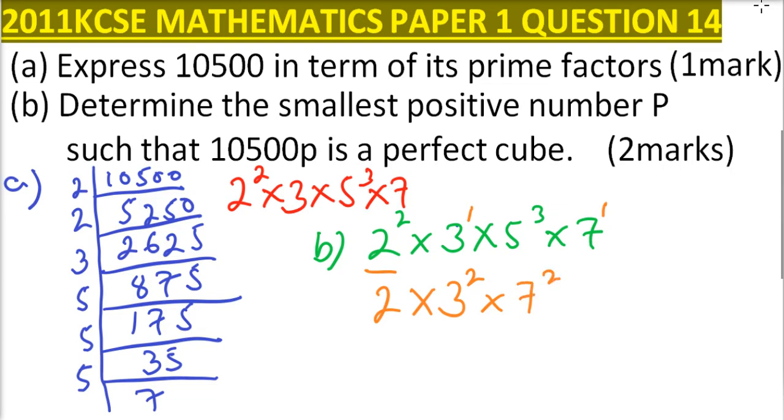And using your calculator, when you multiply that, you should be able to get 882. That is the smallest number which you can multiply with this number to make it a perfect cube. And that is how you work it out.